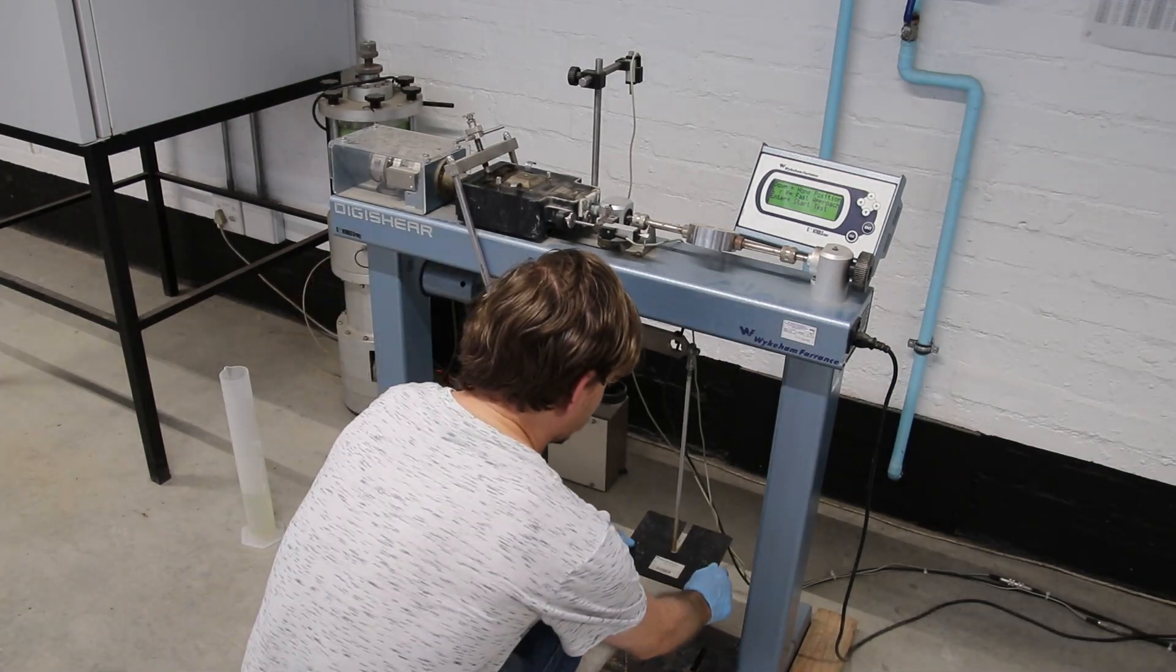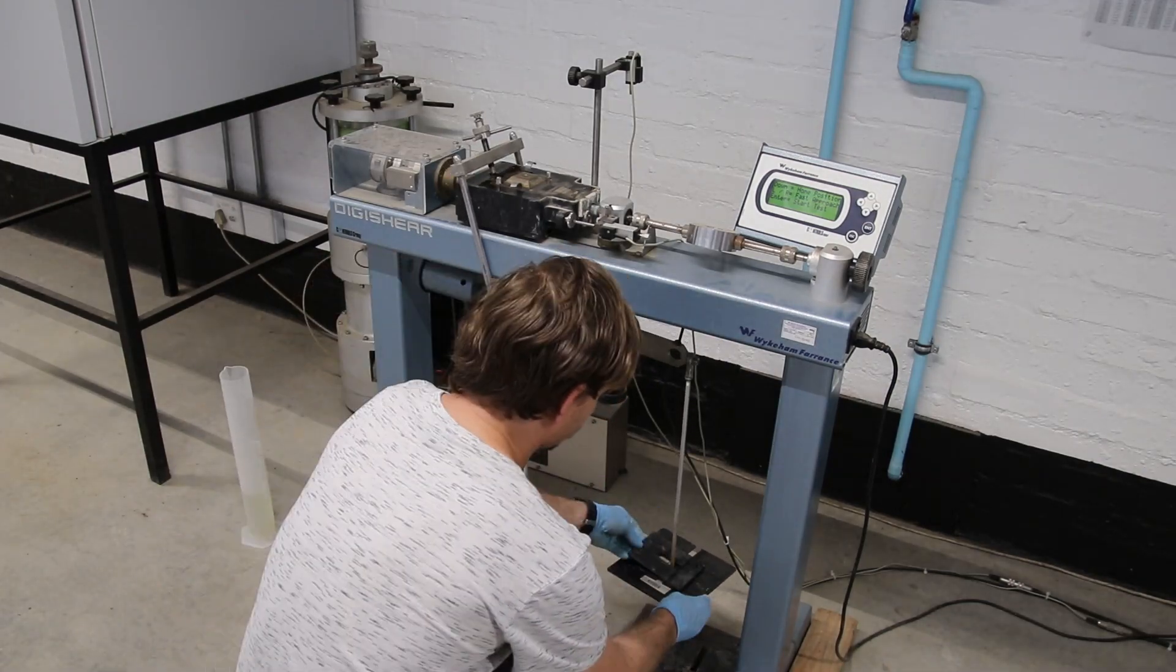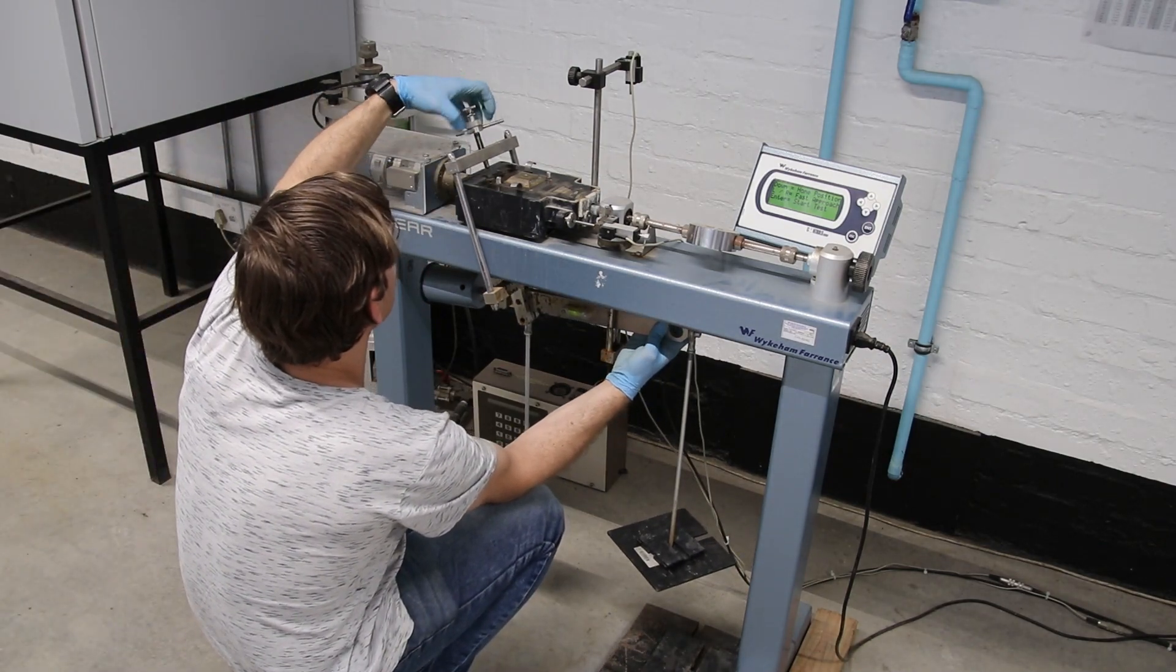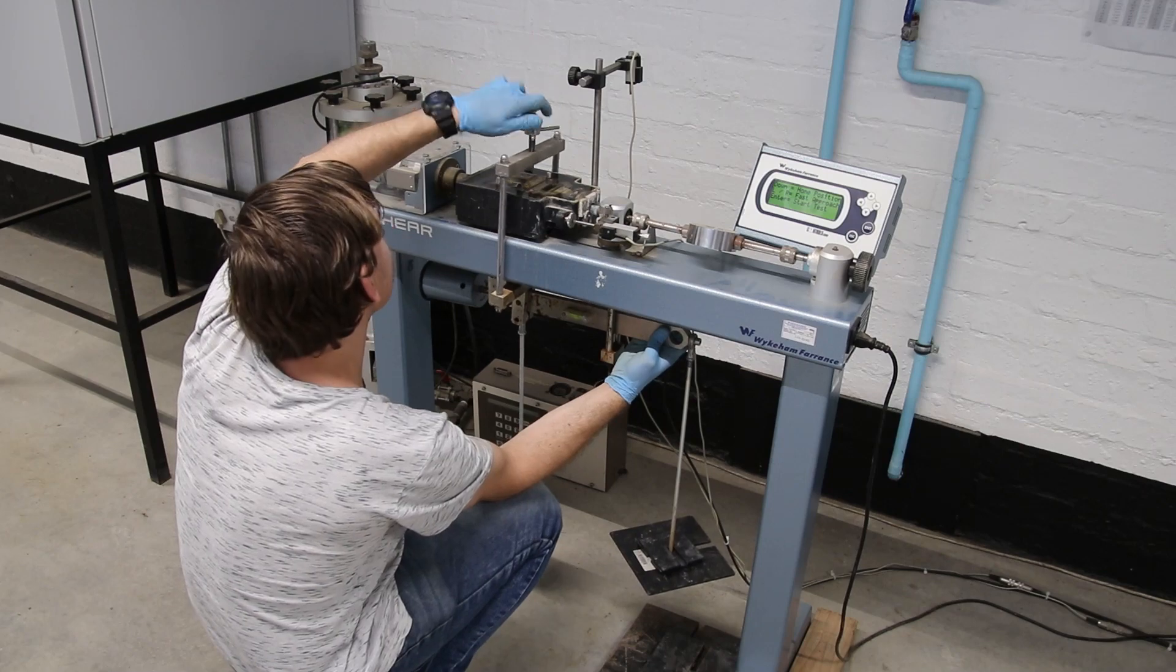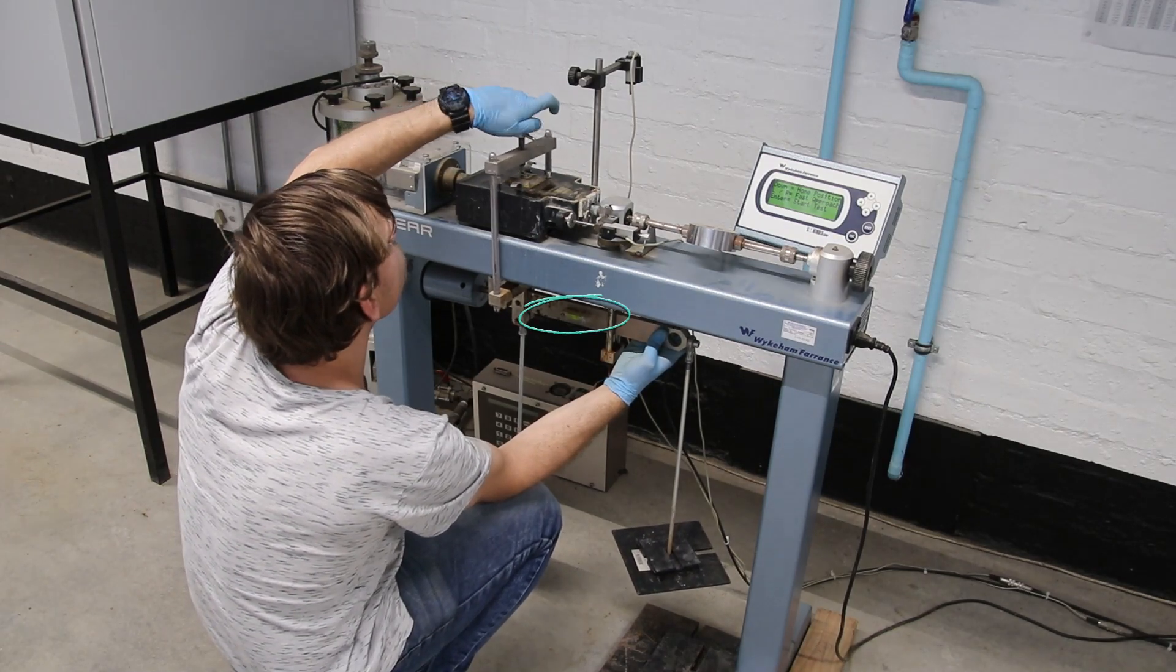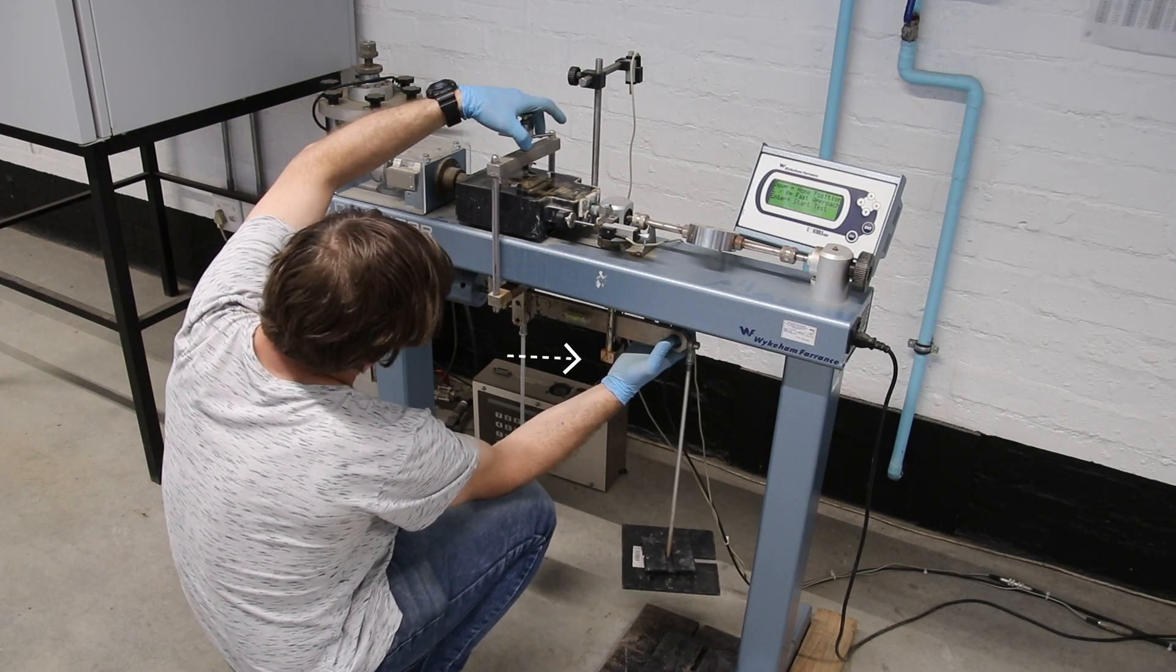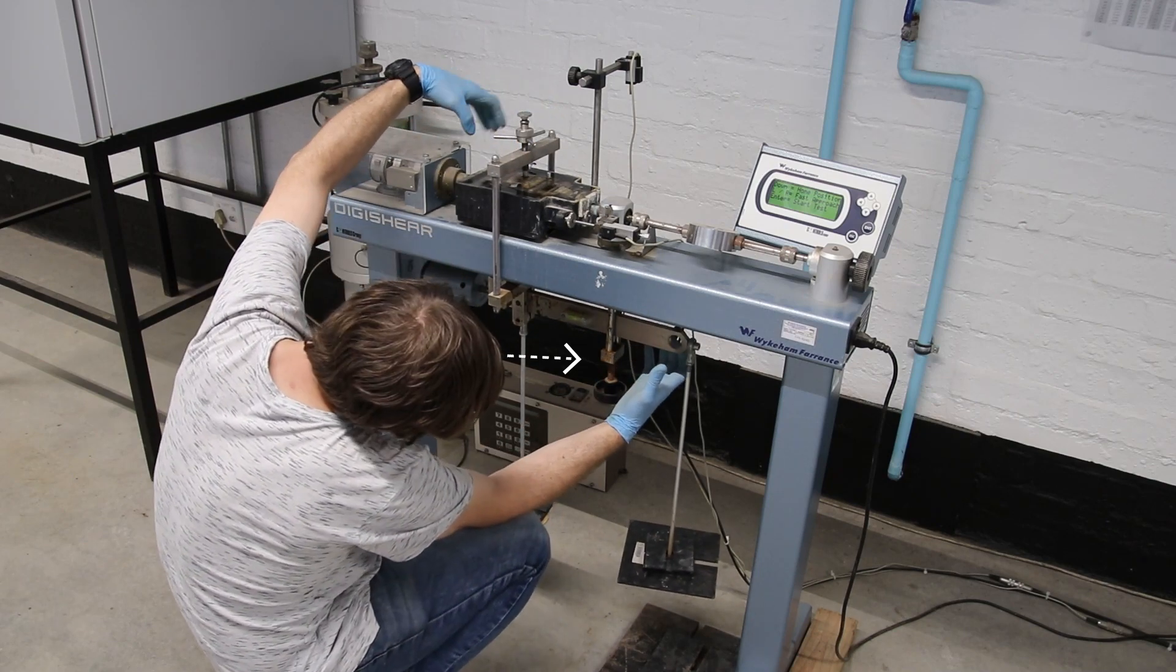Place the correct load on the right lever arm. Place the correct load on the left lever arm. Make sure not to lower the weights onto the sample until you are ready to test. Make sure weights are leveled by use of the spirit level. Use the leveling screw to hold the weights up before testing. Make sure that you unscrew the leveling screw just prior to pressing the start button.